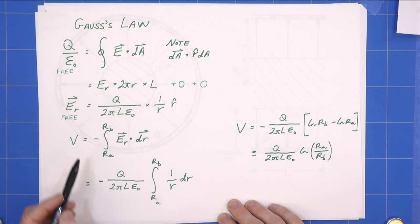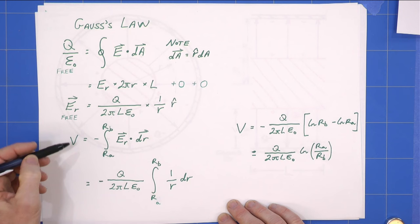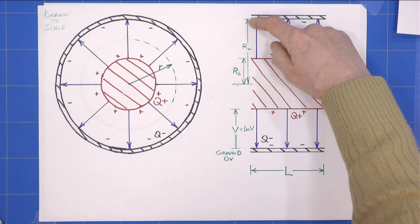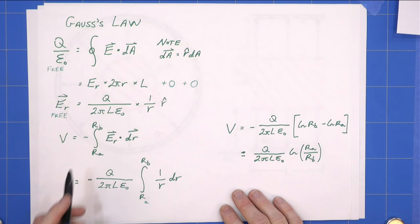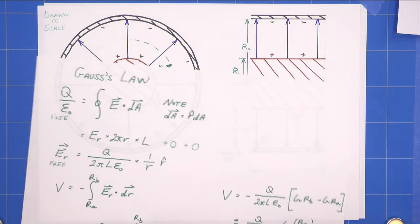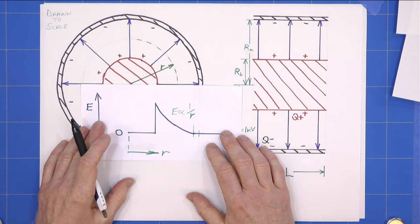We now need to find the potential. So what we need to do is the integral from RA to RB. We're going from there to there, or we're going from here to here. And it is the dot product of the value of the vector ER dot dR.